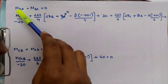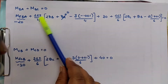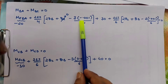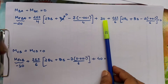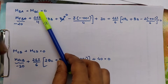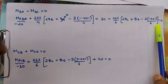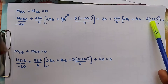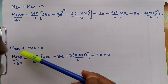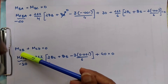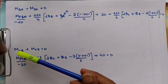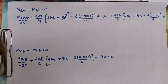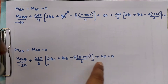We substitute all fixed end moments and deflection values into the equations. For spans BA and BC: the fixed end moments are substituted, the length is four, θA is zero, and the deflection value is substituted. For BC, length is six with its deflection value. For CB and CD, we write the equations with fixed end moments, length, and positive deflection values.